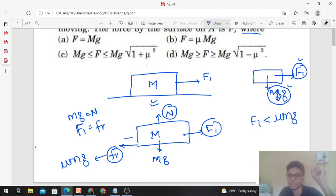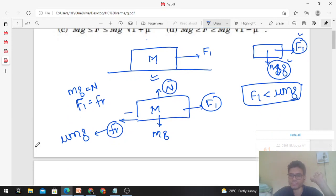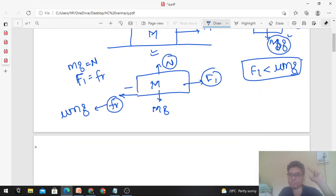So one thing you can say about the external force: F1 should be less than μMg. The external force that the person is applying, F1, to pull this body will be less than μMg because friction is able to cancel F1. Since friction's limiting value is μMg, of course the external force value will be less than μMg.